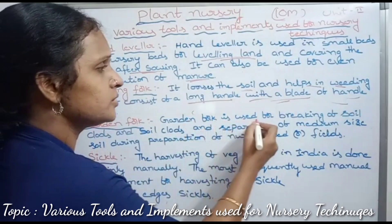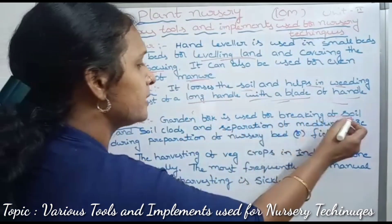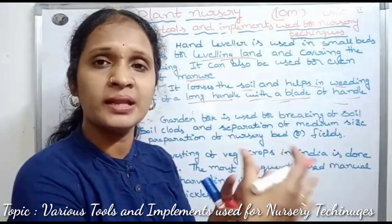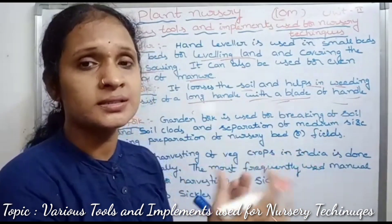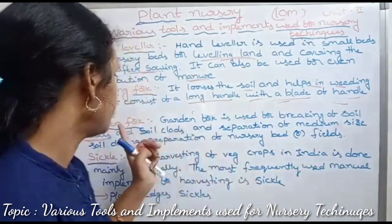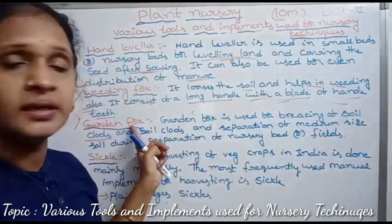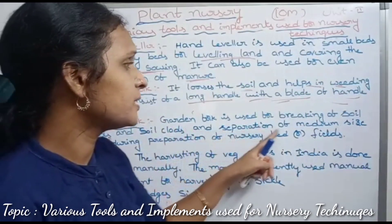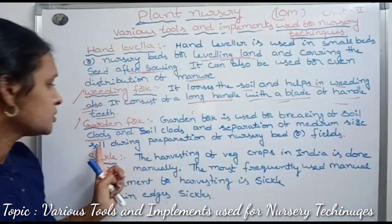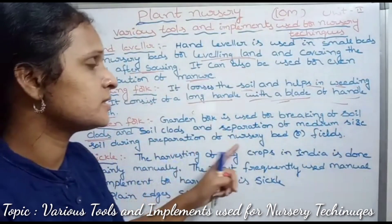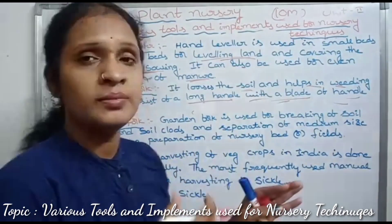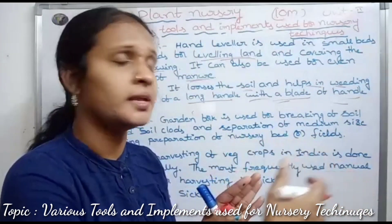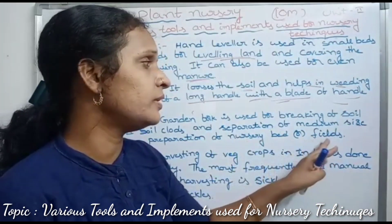The garden fork is used for breaking soil clods. It is also used for the separation of medium-sized soil during the preparation of nursery beds and fields.